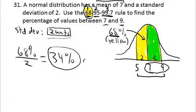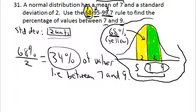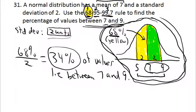Half of 68% is 34%. So 34% of values lie between 7 and 9. You really have to read the question carefully. The procedure for drawing your graphical guide is the same every time, but the numbers you pull from it depend entirely on what they ask. Between 5 and 9 would be 68%; between 7 and 9 is 34%; between 5 and 7 is also 34%. They could also ask about greater than 9 or less than 5, so pay close attention to what they're asking once you have your picture.